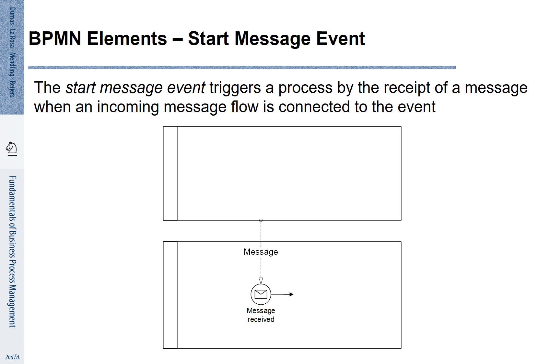A usual pattern is that processes are often triggered by our customers or partners sending orders to us. This can be nicely shown with a start message event. A start message event triggers the process on our site. And showing who is triggering this can be done with a message flow.